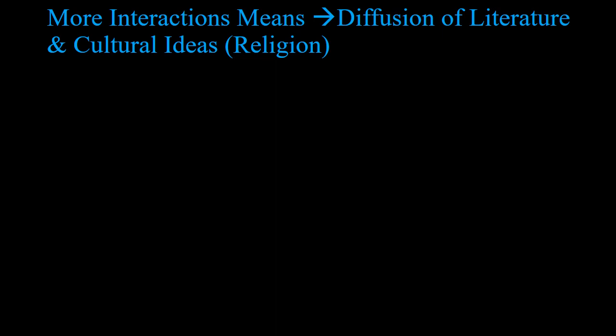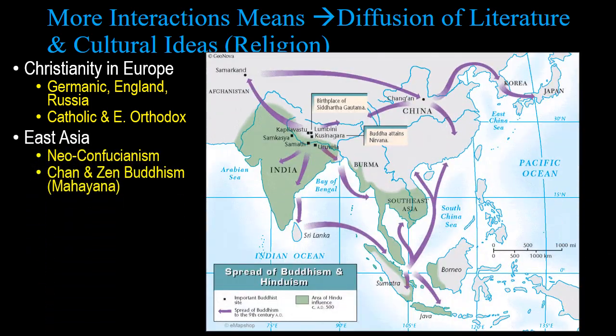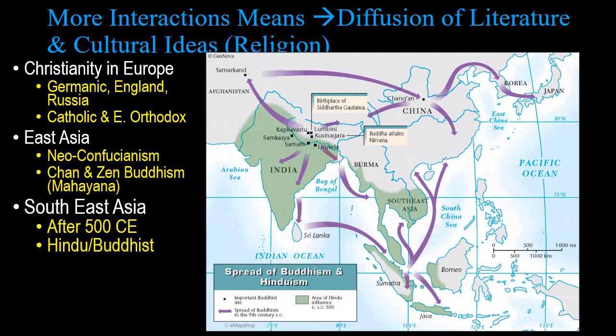More interactions means diffusion of literature and cultural ideas such as religion. Christianity in Europe spread to Germanic regions, England, and Russia. The split between Catholic and Eastern Orthodox happened because of geography separating Western and Eastern Europe. In East Asia you have Neo-Confucianism and new versions of Buddhism — Chan in China, or Zen Buddhism in Japan, which comes from Chan Buddhism. In Southeast Asia you get some Hindu-Buddhist influence, such as with Srivijaya.